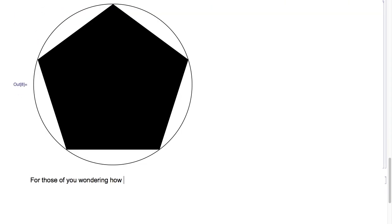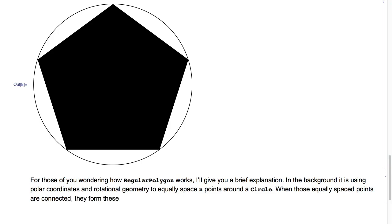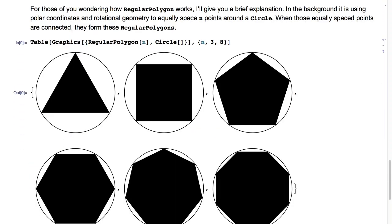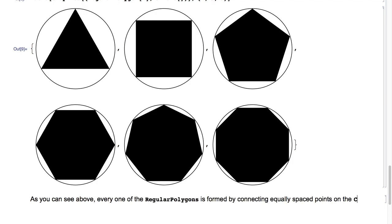For those wondering how RegularPolygon works, I'll give a brief explanation. In the background, it uses polar coordinates and rotational geometry to equally space n points around a circle. When those equally spaced points are connected, they form these regular polygons. So typing Graphics of the list of RegularPolygon of n, comma Circle of nothing, wrapped in Table with n from 3 to 8, you can see that every regular polygon is formed by connecting equally spaced points on the circle.